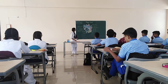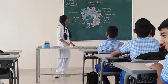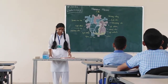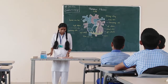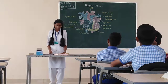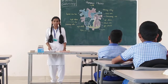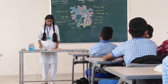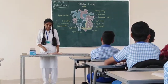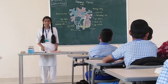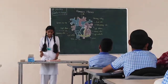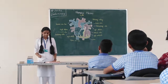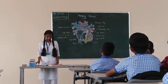Today we will learn the human blood circulation system. The human blood circulation system consists of the heart and blood vessels. There are three types of blood vessels.